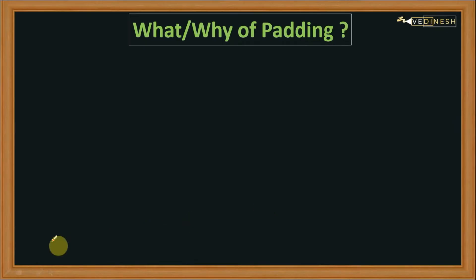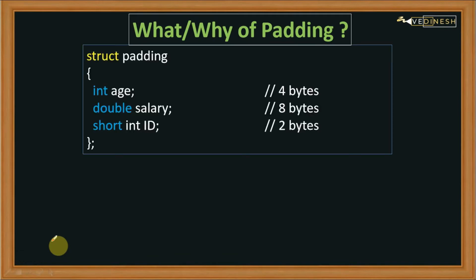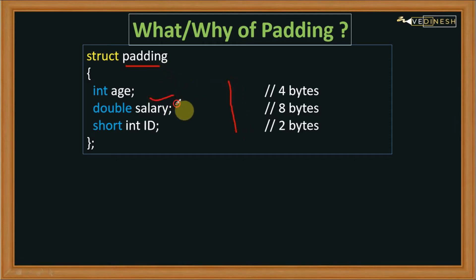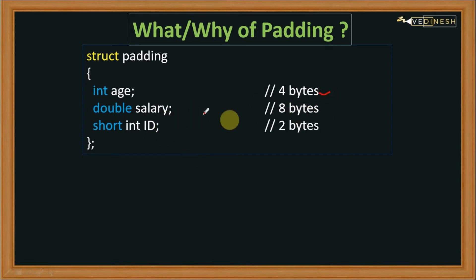In this lecture we are going to see what is padding and why we use padding. Here we have created a structure named 'padding' with three structure members: age, salary, and id — of types int, double, and short int respectively. This int will take four bytes of memory, this double will take eight bytes, and this short int will take two bytes of memory.